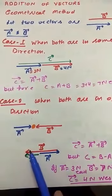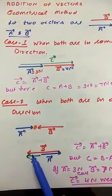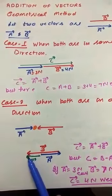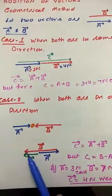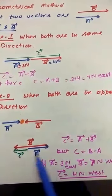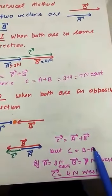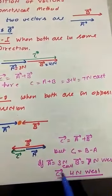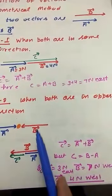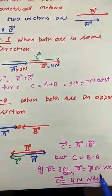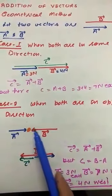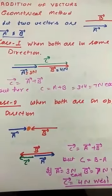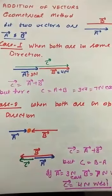For Case 2, draw vector A first, then from its head draw vector B in the opposite direction. The resultant is still from the tail of the first to the head of the last. Here, the magnitude of C equals the magnitude of B minus the magnitude of A. If vector A is 3 Newton and vector B is 7 Newton, then vector C is 4 Newton in the direction of the larger force — in the west direction.